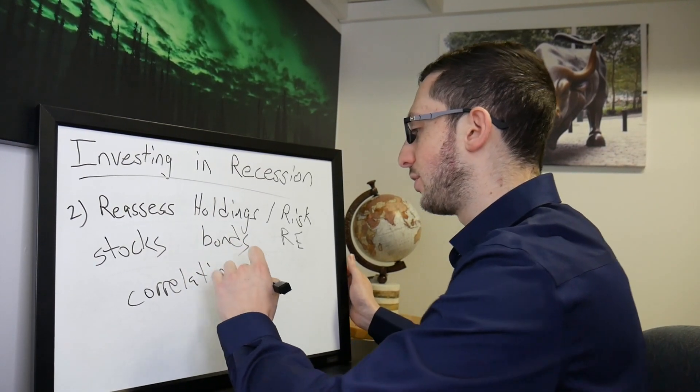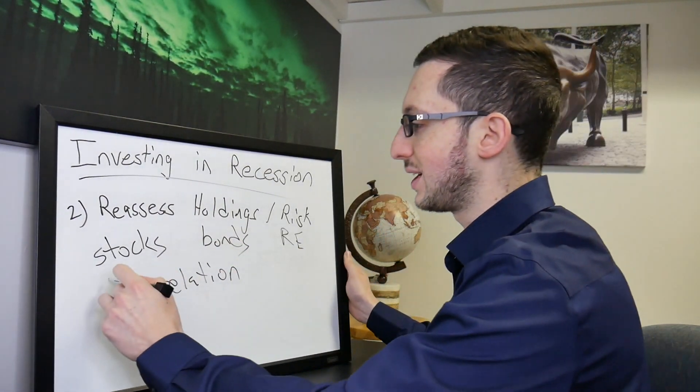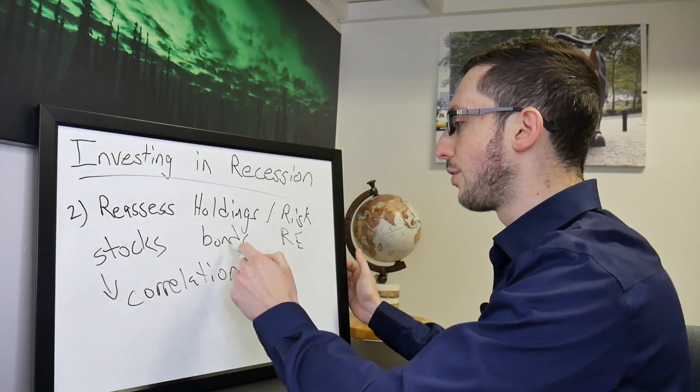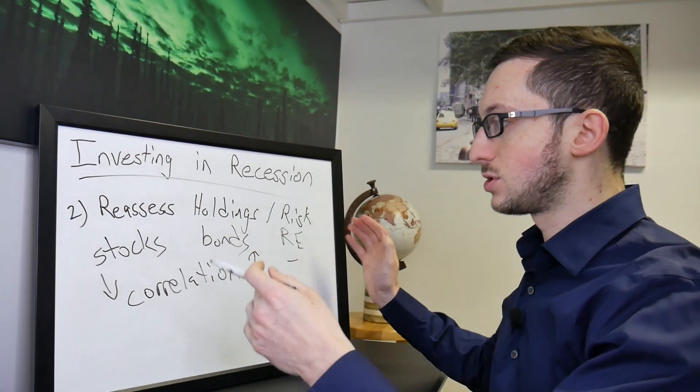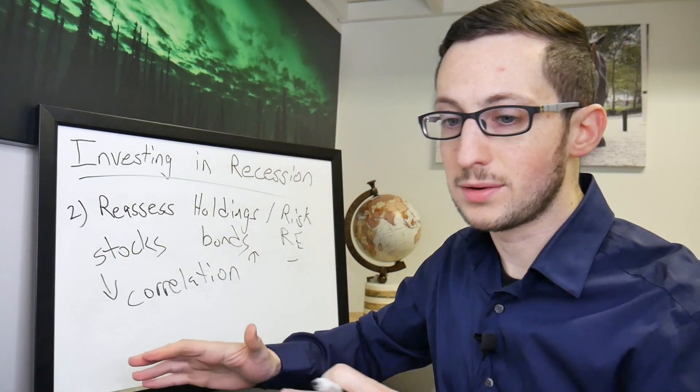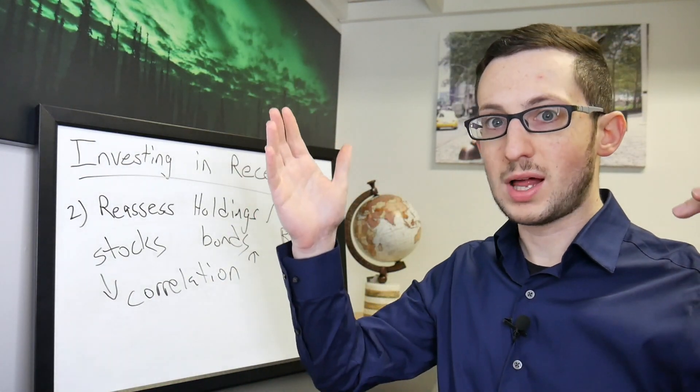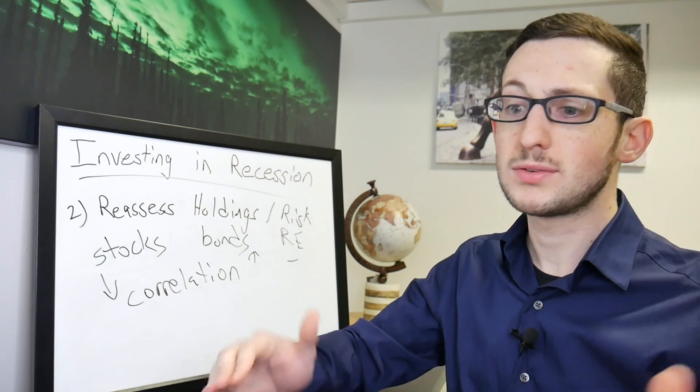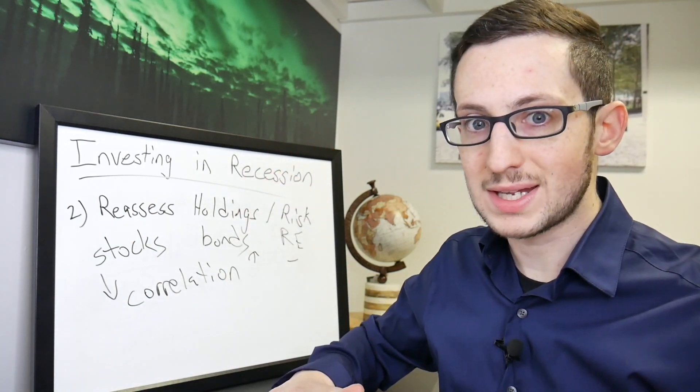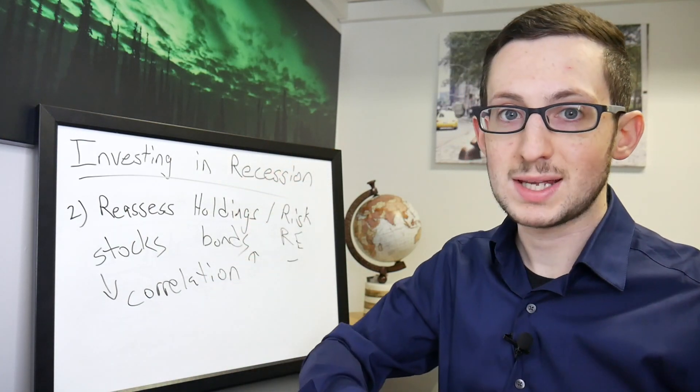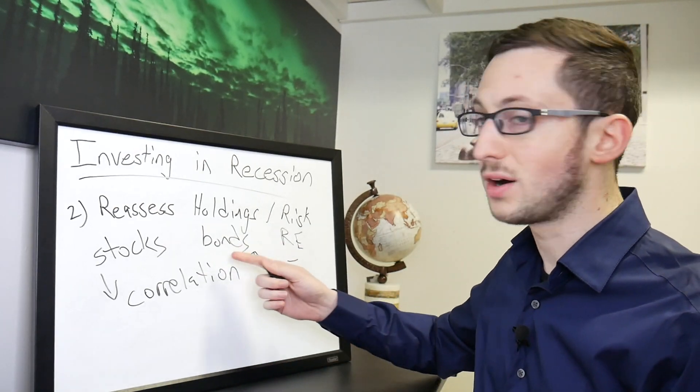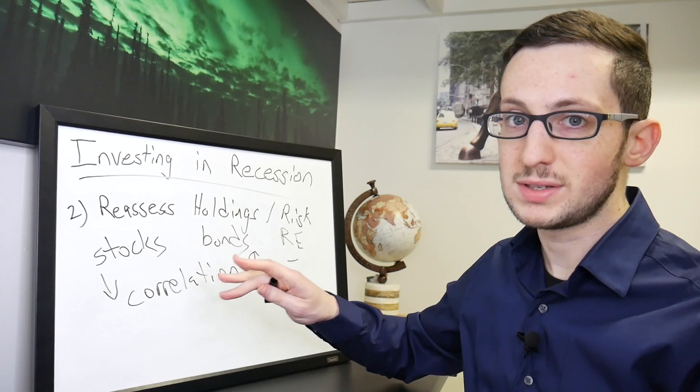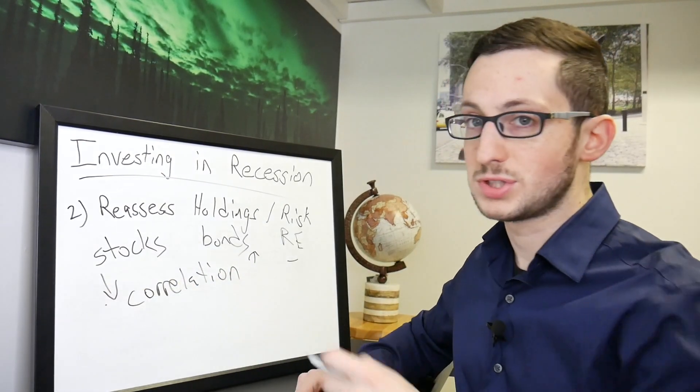For example if stocks go down you want other things to either go up or remain the same. So you don't want everything to go down. Recently because there's a lot of selling, there's margin calls and all that stuff, basically everything is going down. But when things kind of stabilize which might take a while, there are other things out there that have gone up or are relatively flat when stocks are still down.